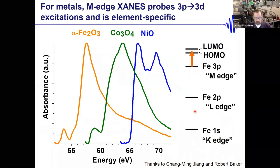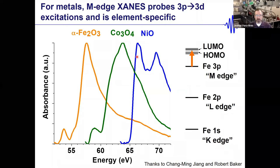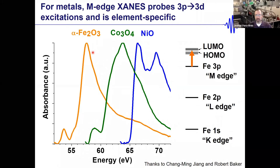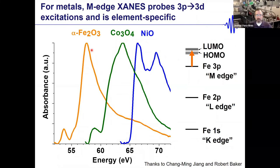Until tabletop sources came online, there wasn't much spectroscopy done in this XUV spectral region. I want to prove the information content is quite rich. Here are ground-state spectra of iron oxide, cobalt oxide, and nickel oxide. Because we're doing a 3p-to-3d transition, we get elemental specificity — cobalt holds its 3p electrons more tightly than iron, giving a 5–10 eV blue shift from metal to metal — and there's a lot of structure in these peaks.